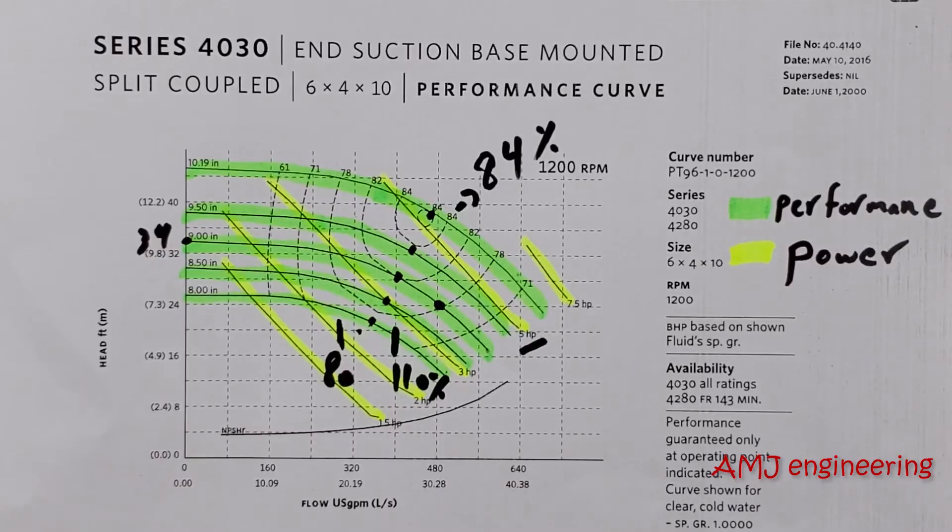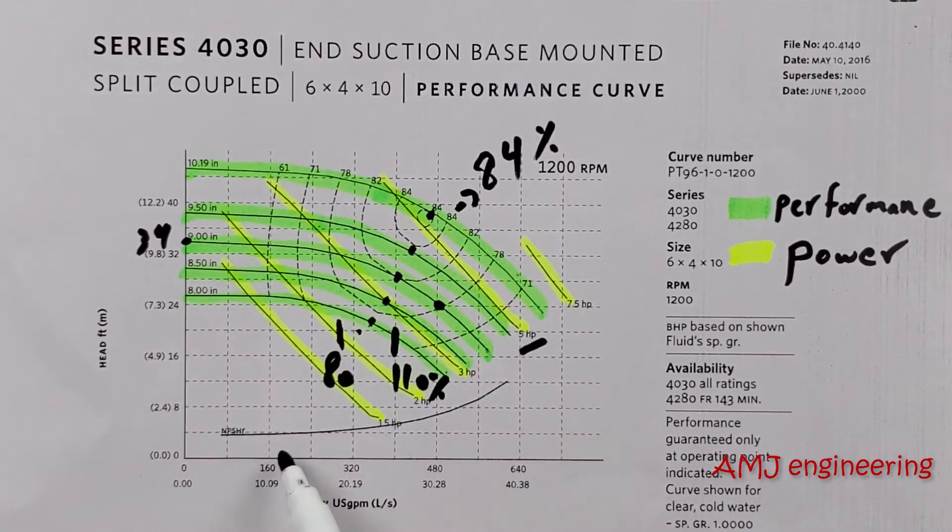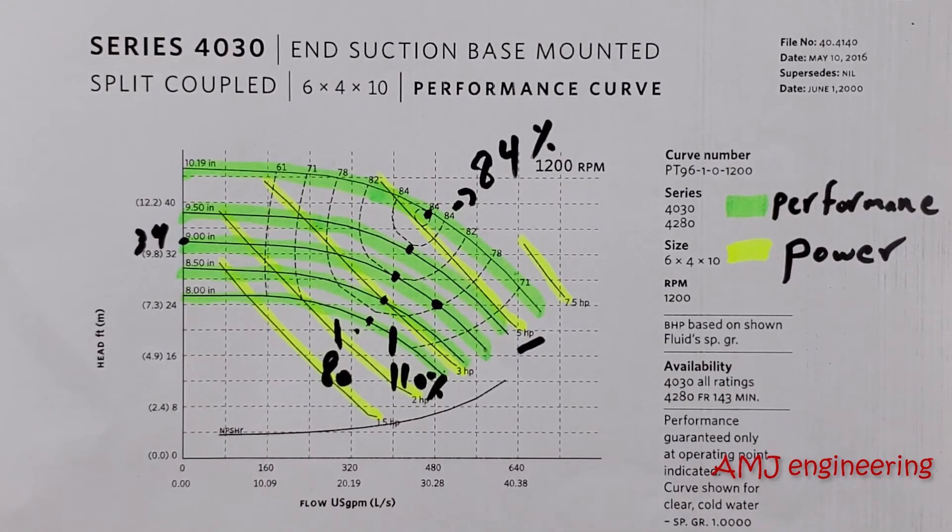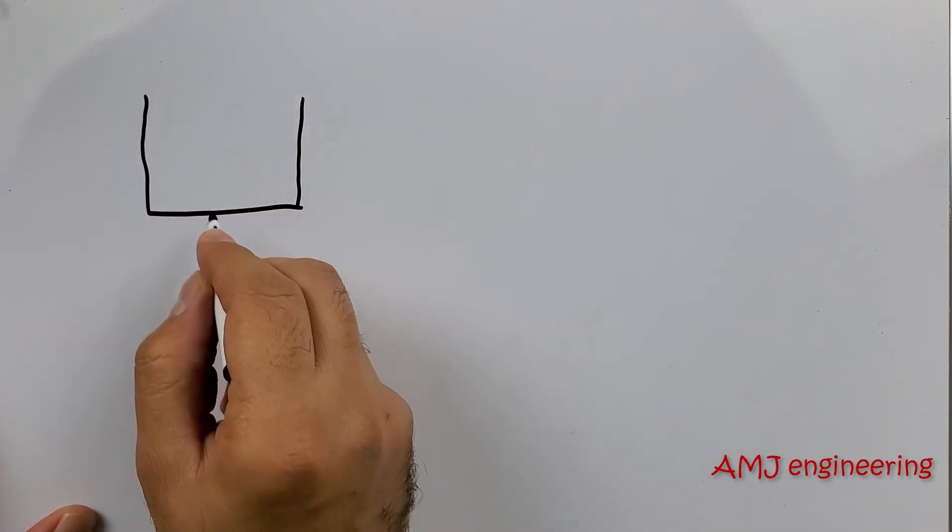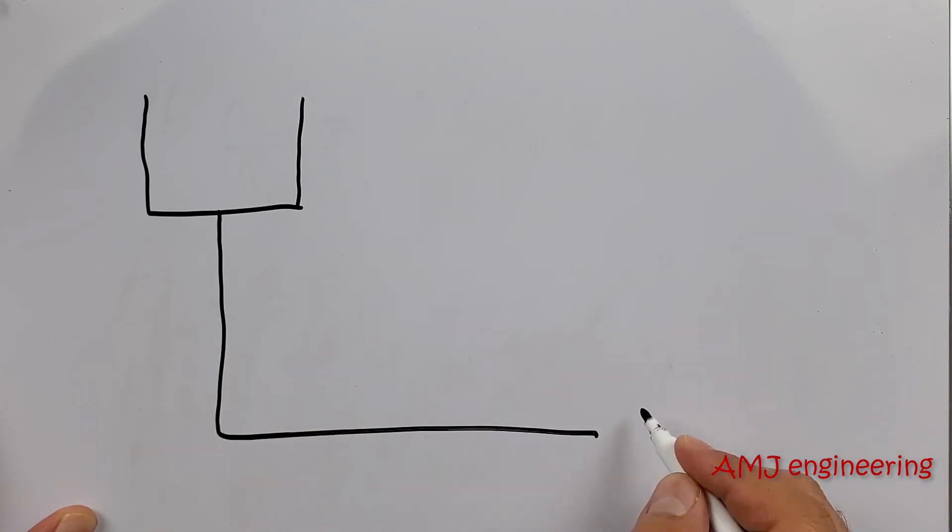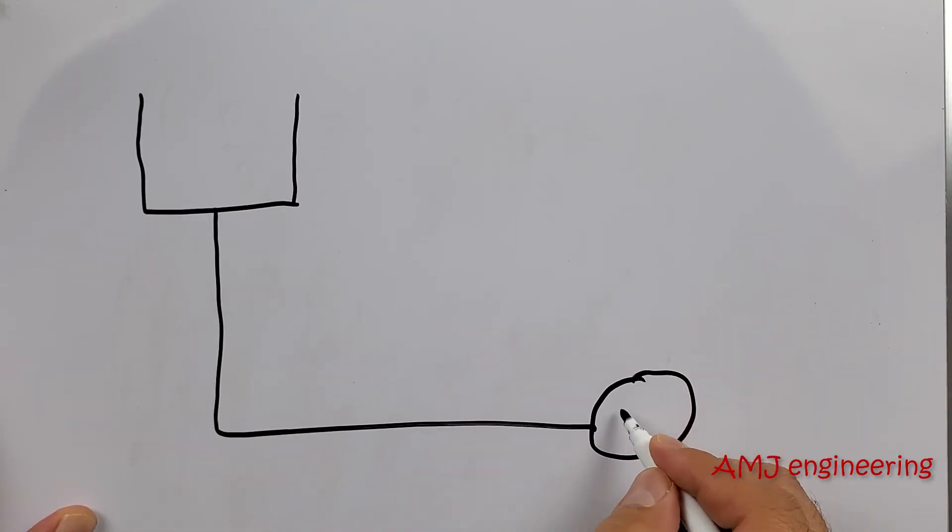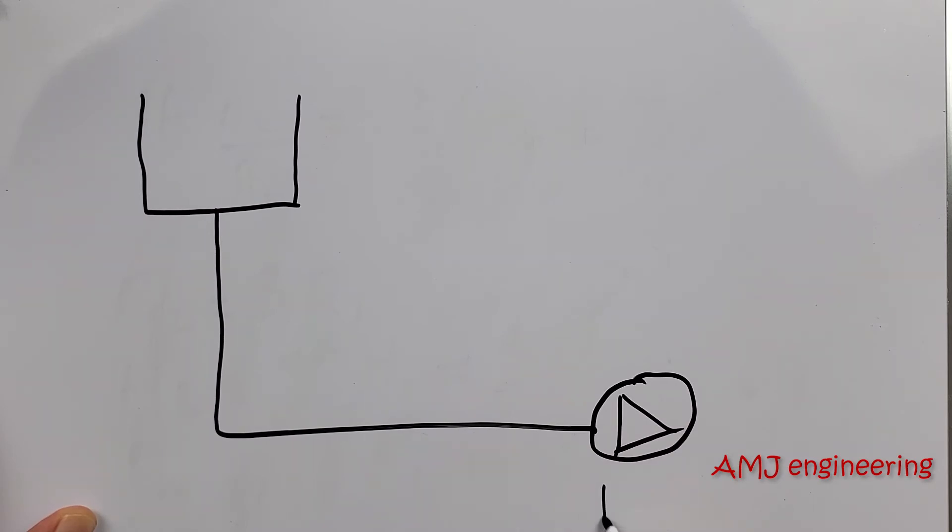Now, the third important part of the pump curve is the net positive suction head required curve. This curve provides information about the suction characteristics of the pump at different flows. The net positive suction head required gives you an indication for the minimum suction head that should be available by the pump at a certain flow to avoid cavitation issues that would be damaging to the pump and would have a negative impact on overall pump performance.